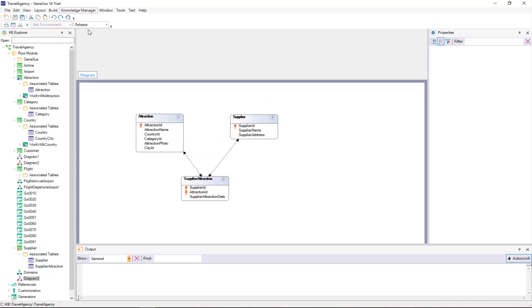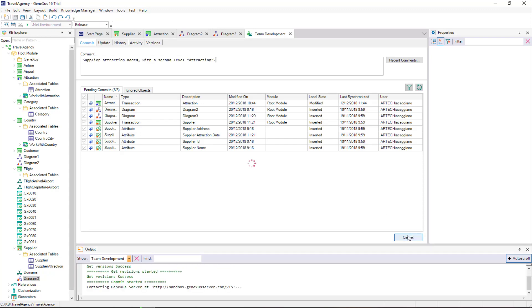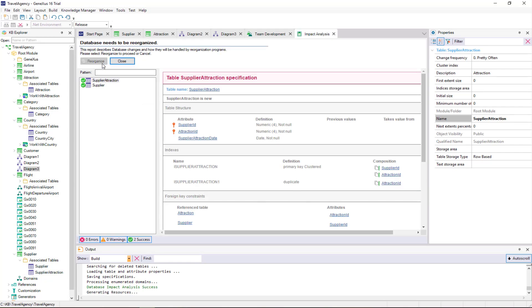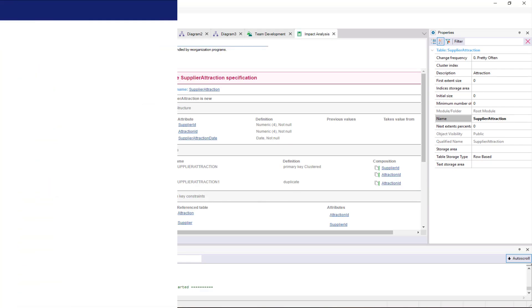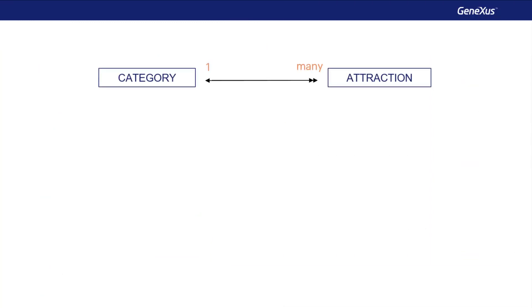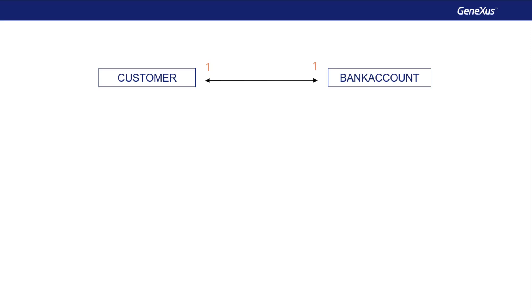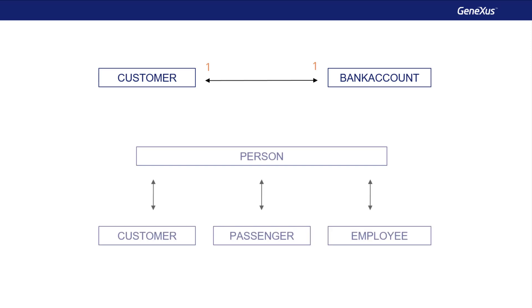Finally, let's update our KB and GeneXus server, and we reorganize it to have the tables created. So far, we've seen that using transactions and their attributes, we can represent different relationships between the actors of our reality — for example, when the travel agency needs to associate with each customer the bank account opened to pay for the services hired. We also mentioned one-to-one relationships in the context of subtypes and specialization, when an entity is a particular case of another.